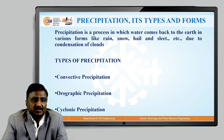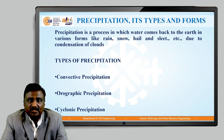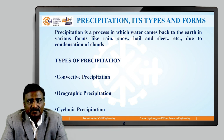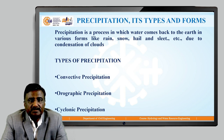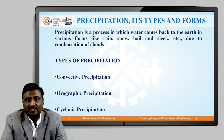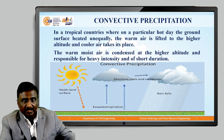Now let us see different types of precipitation. There are three types of precipitation. First one is convective precipitation, second one is orographic precipitation, and third one is cyclonic precipitation. These are all the three different types of precipitations. Now let us see one by one in detail.